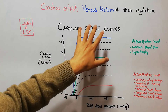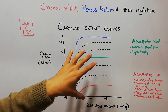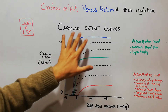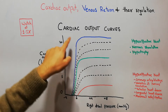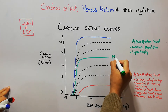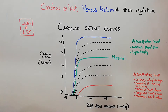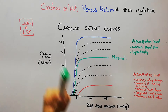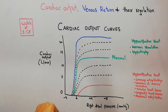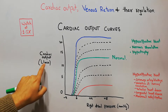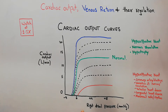With the help of these graphs we are also going to discuss the effect of different kinds of stimulation, hypertrophy, and different diseases on the cardiac output. First, we look at the normal cardiac function curve shown in green. On the y-axis we have plotted cardiac output in liters per minute, and on the x-axis we have plotted right atrial pressure in millimeters of mercury.